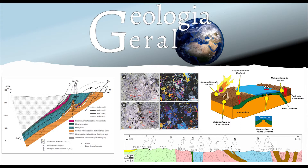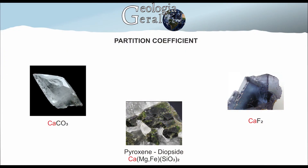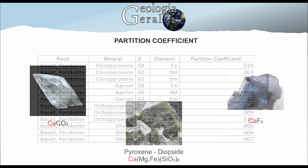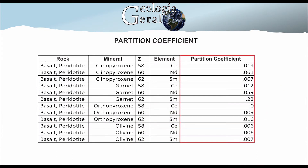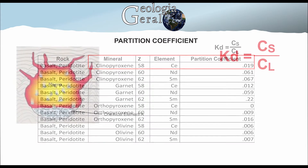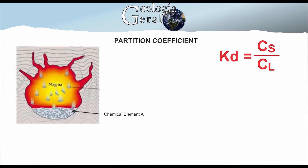Hello, welcome to Geologia Geral. Today we're going to talk about partition coefficient and element compatibility. The partition coefficient is a numerical value that determines the affinity of a chemical element with a certain mineral. It is expressed by the acronym KD and is represented mathematically as the ratio of the concentration in the solid to the concentration in the liquid. In geological terms, it means where the element is most likely to concentrate — on the rock or mineral as solid representatives, or the magma or fluid as liquid representatives.